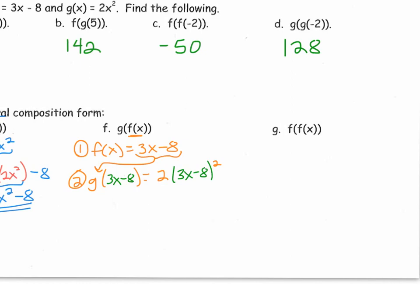And anytime we square a parenthesis that has either addition or subtraction, the only correct way to do this is to FOIL. We can't just square individual parts, we're going to have to FOIL that out. We're going to leave the 2 until the very end, and I'm just going to write 3x minus 8 twice.